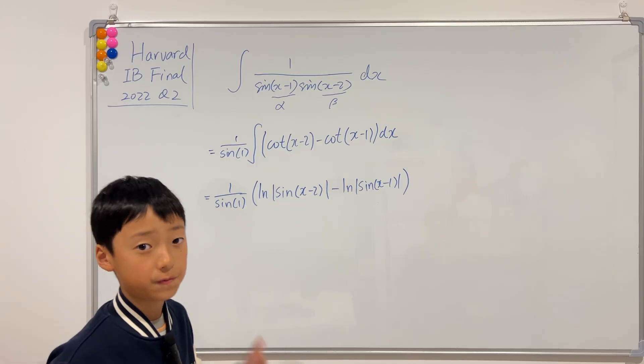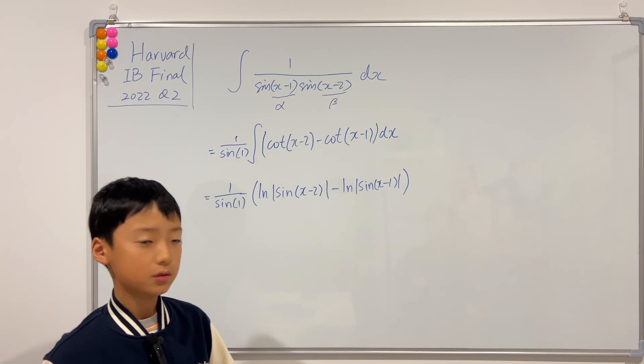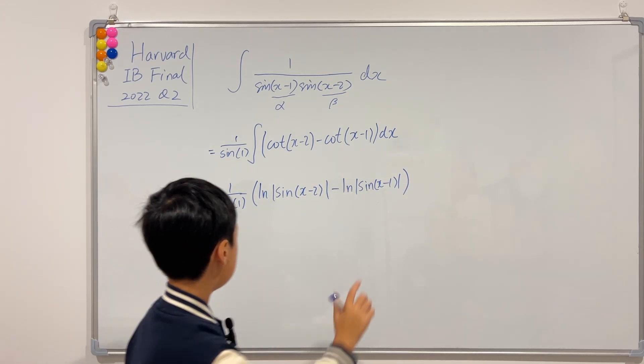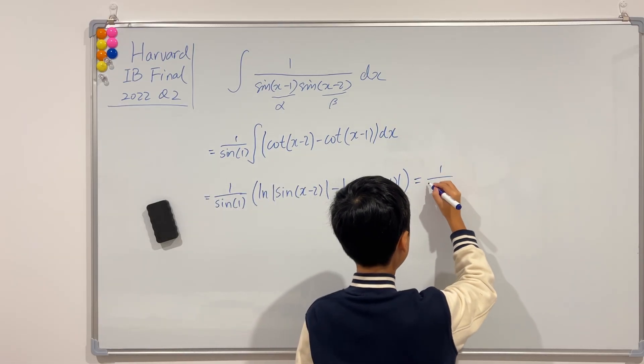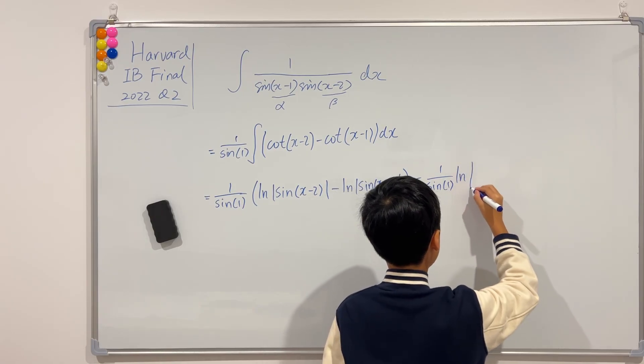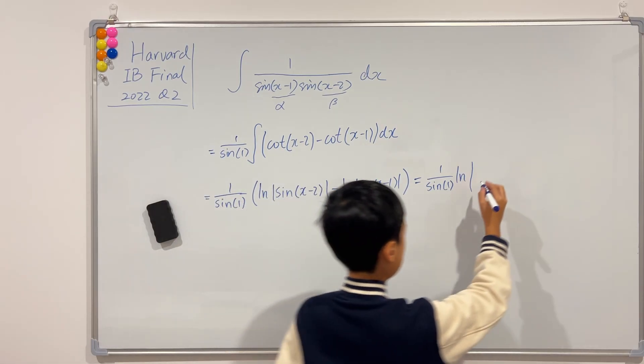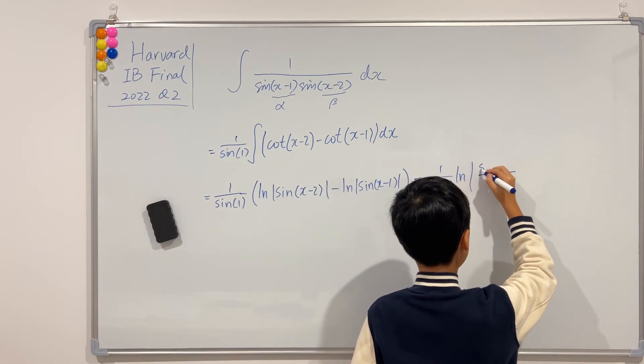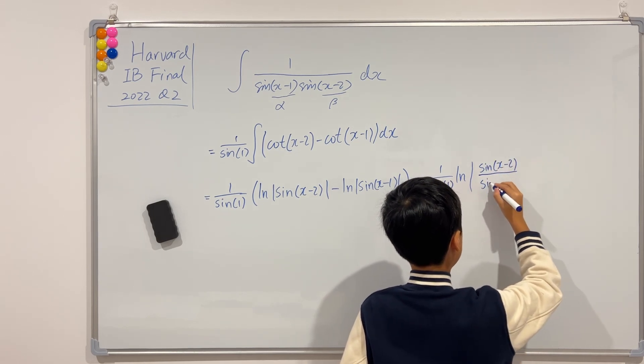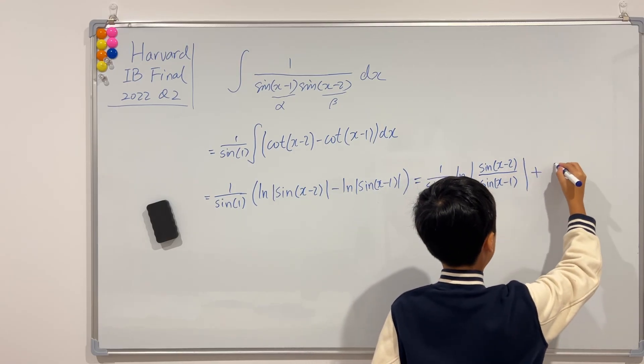And, we can simplify this even further. So, we can make these two ln into one ln by putting this on the numerator and putting this on the denominator. So, we'll get 1 over sine of 1 times ln of big absolute value. And then, this is the numerator and this is the denominator. So, the numerator is sine of x minus 2, and then, the denominator is sine of x minus 1. And, of course, don't forget the plus c.